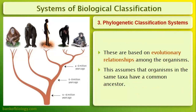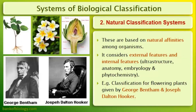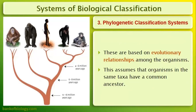The phylogenetic classification system is related to evolutionary relationships. In this system we study phylogeny and evolution. It assumes that organisms in the same taxon share a common ancestor — for example, primates, which is the order of human beings, monkeys, and apes. All organisms within a taxon have similar characteristics and similar ancestors. This system proves that the phylogenetic classification approach is correct.